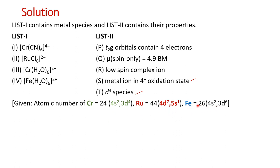Using the outermost electronic configurations it is easy to find the oxidation state of the metal ion. For the 3d series, the second digit of the atomic number gives the number of d electrons — so for chromium (Z=24) it has 4 d-electrons, and for iron (Z=26) it has 6 d-electrons. This shortcut works for 3d series elements specifically.